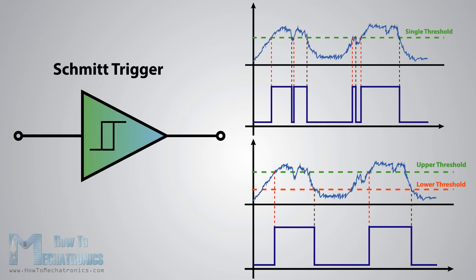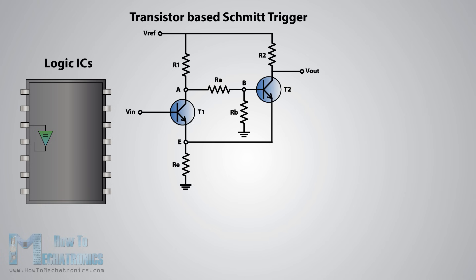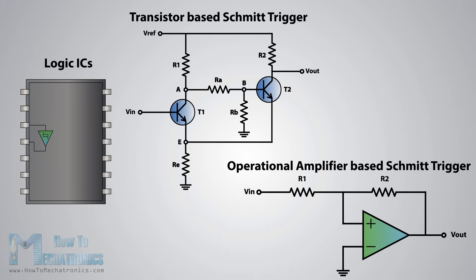That's the primary function of the Schmitt trigger: to convert noisy square waves, sine waves, or slow edge inputs into clean square waves. There are many logic ICs that have built-in Schmitt triggers on their inputs, but it can also be built using transistors or easier using an operational amplifier or comparator by adding some resistors and positive feedback.